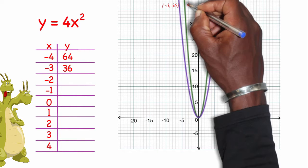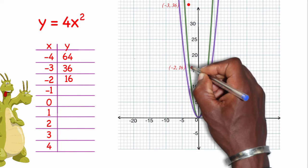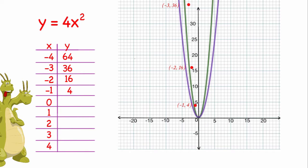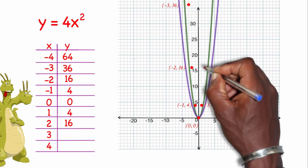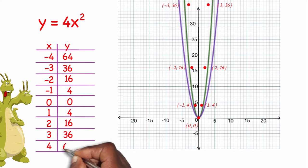Negative 3, 36. Negative 2, 16. Negative 1, 4. And 0, 0 - that's the staple, that's the vertex of the center. That's been the center of all our parabolas so far. 1, 4. 2, 16. 3, 36. 4, 64.